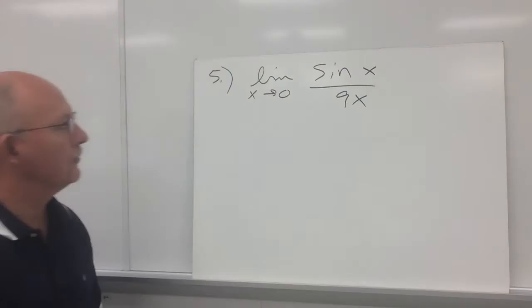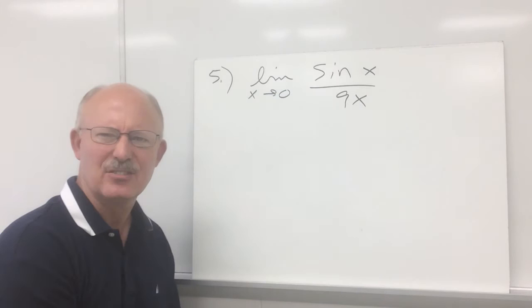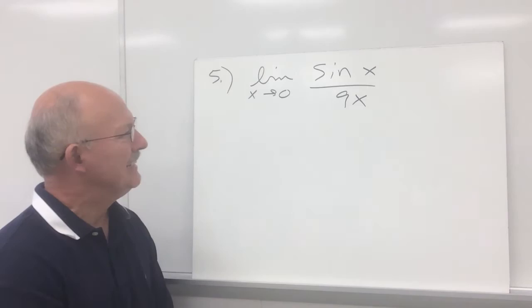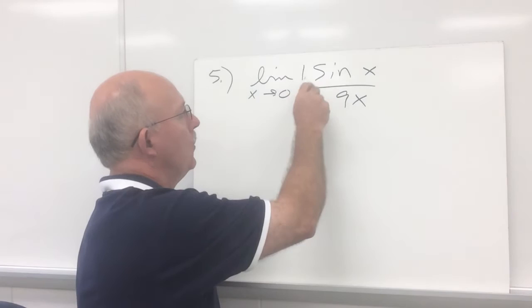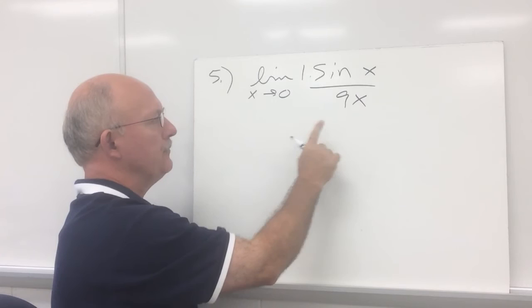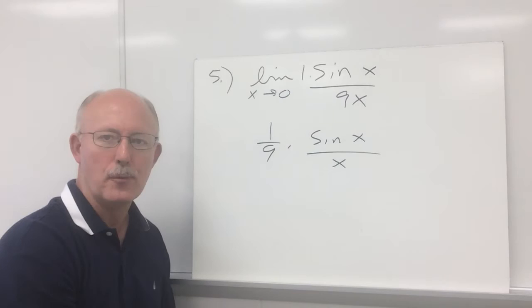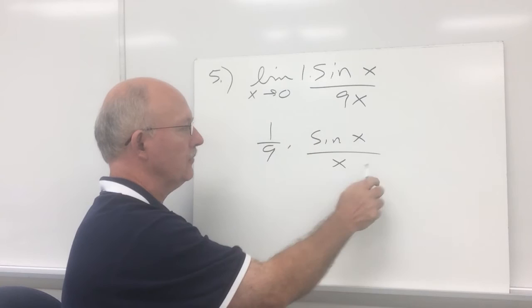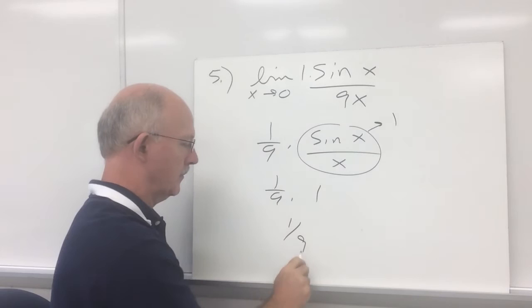Problem number 5: the limit as x approaches 0 of sin x over 9x. I know sin x over x would be 1, so if that 9 wasn't there, let's factor the 9 off. You have 1 ninth times sin x over x. Since sin x over x is 1, we'd have 1 ninth times 1, which is 1 ninth. So this limit evaluates to 1 ninth.